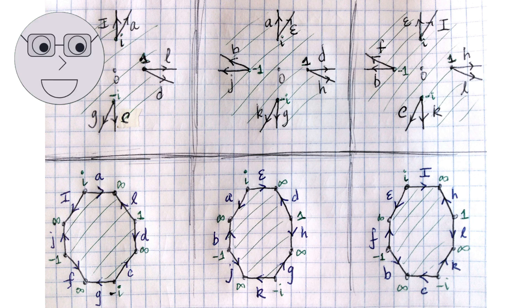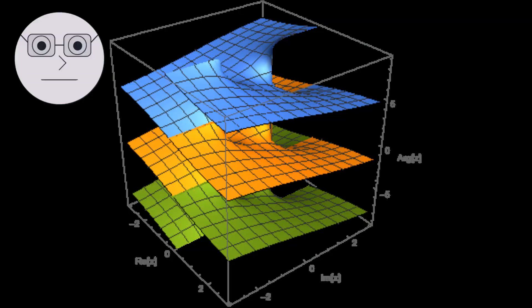Welcome to this video on Riemann surfaces. In this series, we will explore the fascinating world of Riemann surfaces, their properties, and their applications in various fields of mathematics. To begin with, let's define what Riemann surfaces are. A Riemann surface is a complex manifold of one complex dimension. In simpler terms, it is a surface that can be described by a single complex variable.